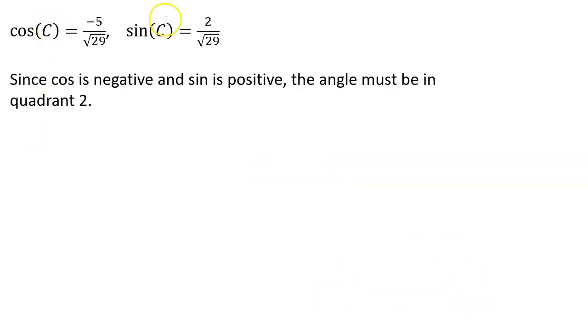So looking at just the cosine and sine equations there, notice that since cosine is negative and sine is positive, the angle must be in quadrant 2, right? Because on a unit circle, the x-coordinate would be negative and the y-coordinate positive in quadrant 2.